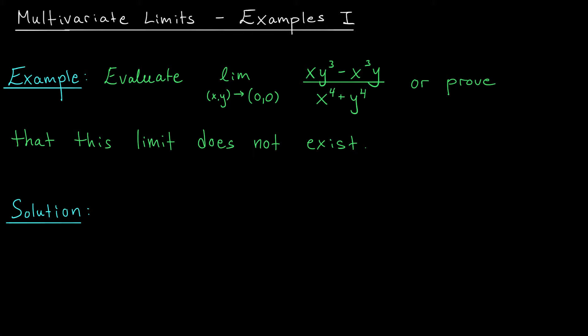Just like in the last example, I'm going to start by looking at the path to the origin where x is constantly 0, along the y-axis. So along the line x equals 0, we're considering the limit as (0,y) goes to (0,0) of 0 times y³ minus 0³ times y divided by 0⁴ plus y⁴. Notice that the numerator here is constantly 0, and so my entire fraction is 0. Therefore, the limit along this line is 0.